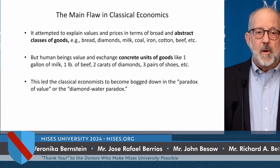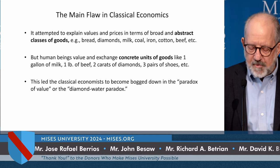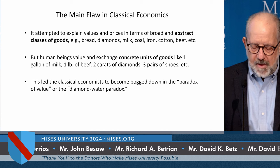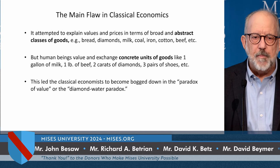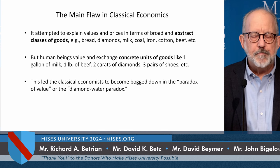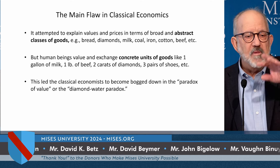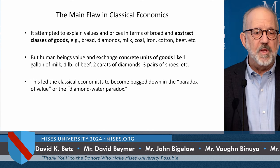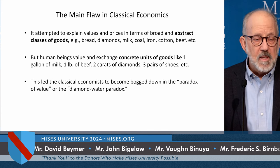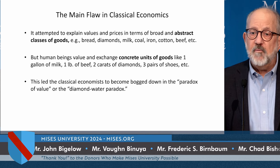But there was a big flaw in classical economics. The Classical School attempted to explain values and prices in terms of broad and abstract classes of goods — they talked about water, diamonds, milk, coal in the abstract. They said, well, diamonds are not as important as water because without water, human beings could not last more than two or three days, whereas if diamonds disappeared from the earth there would simply be a little less ornamentation.